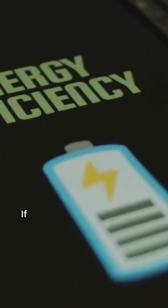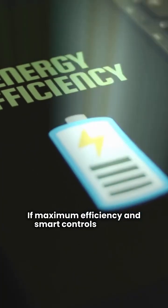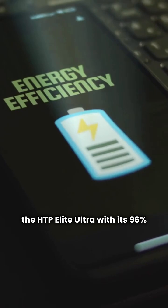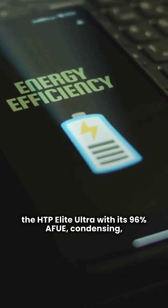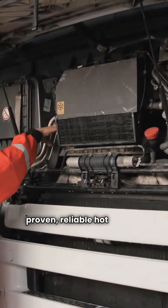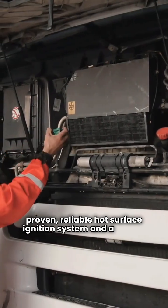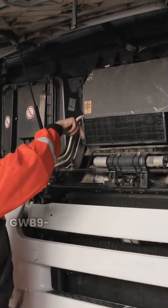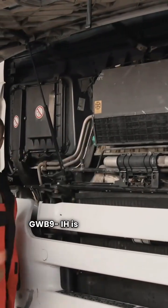So, which one wins? If maximum efficiency and smart controls are your priority, the HTP Elite Ultra, with its 96% AFUE condensing and modulating features, is the clear choice. If you are looking for a unit with a proven, reliable hot surface ignition system, and a decent step-up in efficiency from older models, the Lennox GWB9-IH is a solid option.